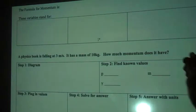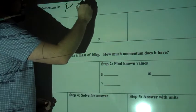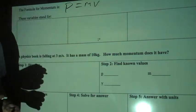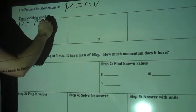All right, so momentum. The formula for momentum is P equals mv. P stands for momentum.